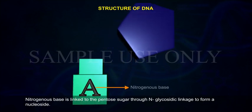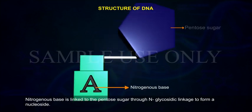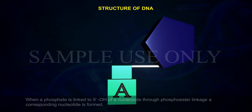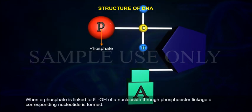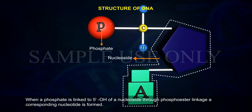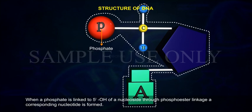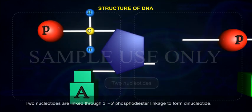Nitrogen base is linked to the pentose sugar through N-glycosidic linkage to form a nucleoside. When a phosphate is linked to 5' OH of a nucleoside through phosphoester linkage, a corresponding nucleotide is formed.